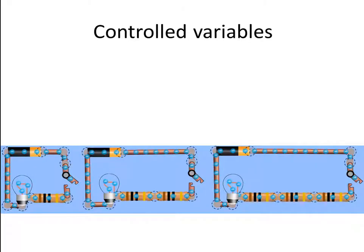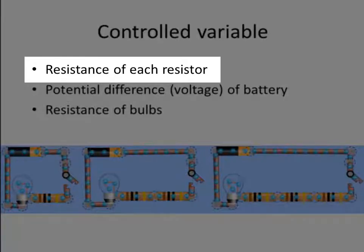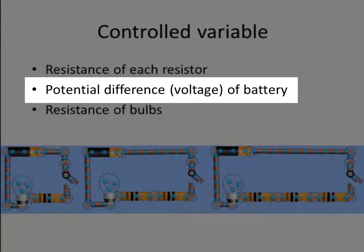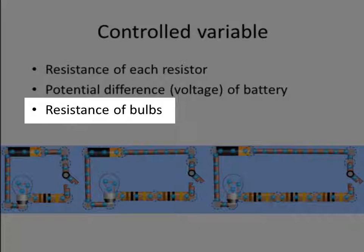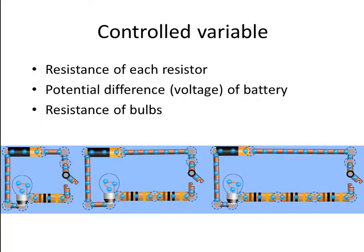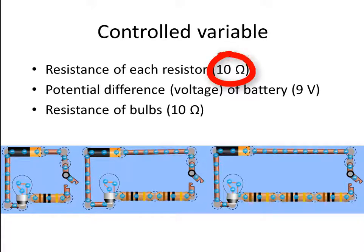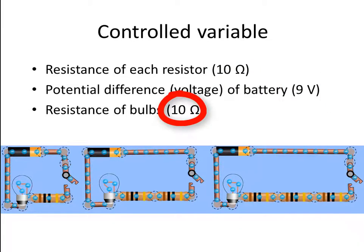What must I keep the same between the three treatments so that this is a fair test? All the resistors must have the same resistance. The potential difference of the battery must be the same for all three circuits, and we must use bulbs of the same resistance. For this investigation, each resistor will have a resistance of 10 ohms, I'm using 9-volt batteries, and the bulbs are also going to have a resistance of 10 ohms.